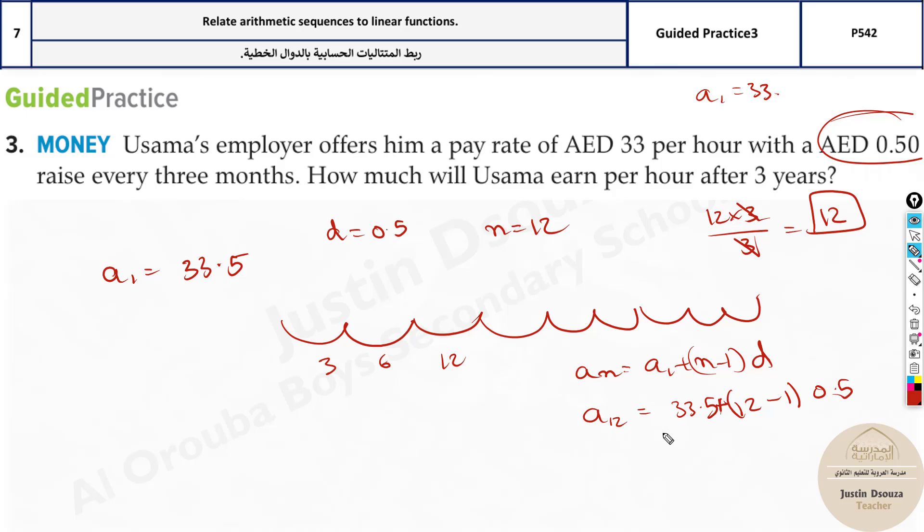Now this is plus - okay, the formula. Please memorize the formula properly. It will be 33.5 and here we have 11. 12 minus 1 is 11. 11 times 0.5 will be 5.5. And the answer will be 38 plus 1, 39.